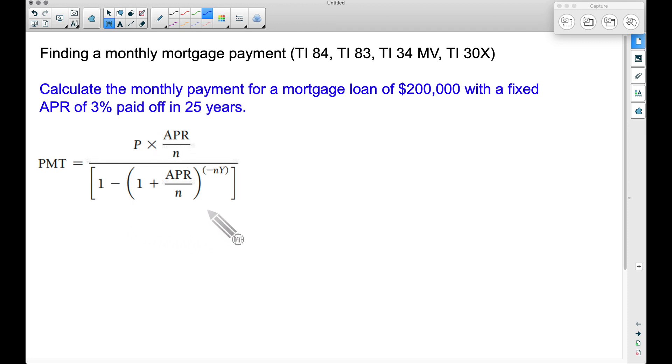This is our formula for an installment loan with a fixed APR. To find the monthly mortgage payment, we want to plug in numbers for all of this and then type this into the calculator. The P is the principal - that's the starting loan amount of $200,000.